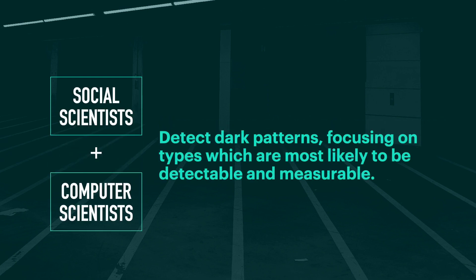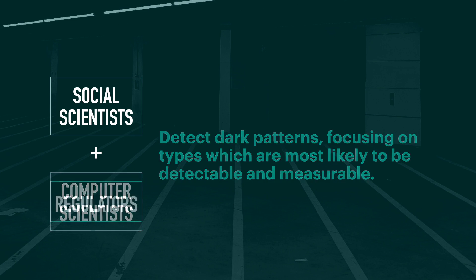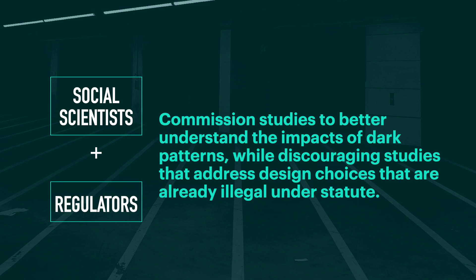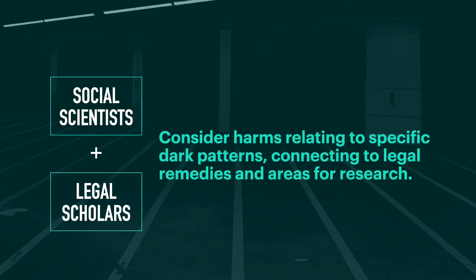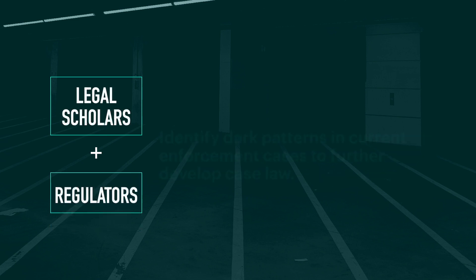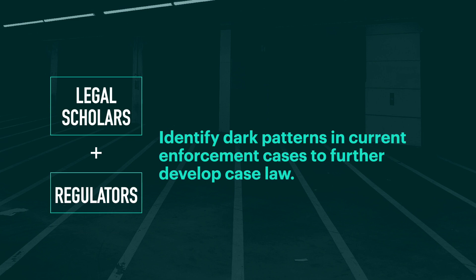For social scientists working with computer scientists, the ontology will enable the detection of dark patterns, recognizing which types might be more detectable and measurable based on their underlying definitions and characteristics. For social scientists working with regulators, the ontology will enable the commissioning of studies to better understand how dark patterns impact people, while also discouraging studies that address functionality that is already illegal. For social scientists working with legal scholars, the ontology will enable the consideration of harms, linking together areas of social science inquiry and potential legal remedies to address the harms or vulnerabilities discovered through research. For legal scholars working with regulators, the ontology will facilitate the consistent identification and characterization of dark patterns in enforcement cases, allowing the development of robust case law.